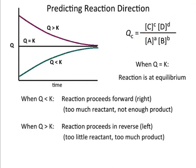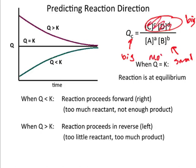Now, the inverse is true when Q is bigger than K. So, if Q is bigger, then your numerator is too big and your denominator is too small. And you do that by making this smaller, so you make less products and you make more reactants. And so, when that's happening, you're making more reactants, you're moving to the left. You're making more reactants, you're getting rid of products in order to bring this back so that Q equals K.